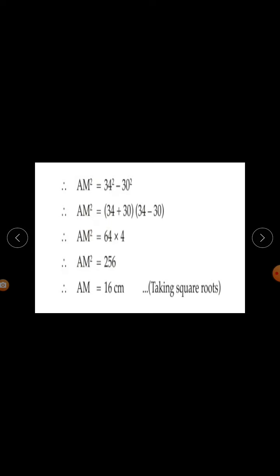Using the identity A² − B² = (A+B)(A−B): AM² = (34+30)(34−30) = 64 × 4 = 256. Taking the square root, √256 = 16. Therefore AM = 16 cm.